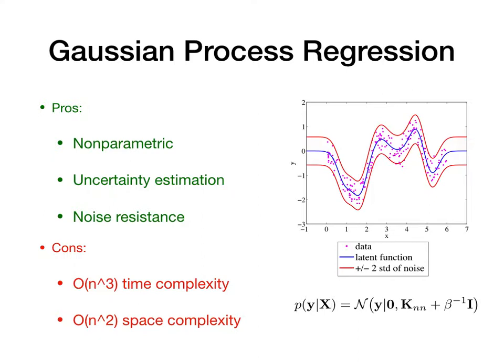The model evidence of the Gaussian Process has a simple multivariate Gaussian form. However, with this evidence, the Gaussian Process is very difficult to work on a large dataset, because to compute the model evidence and the predictive distribution, we need to take the inverse of an n-by-n matrix, which takes order n-cubed time and order n-squared space, which cannot scale to very large datasets.